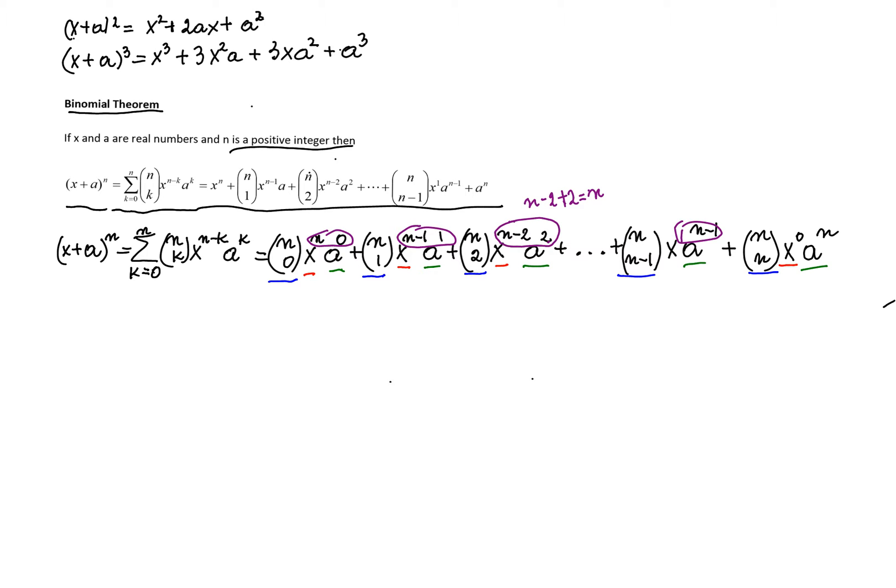For example, you can quickly write the formula for x plus a to the power, let's say, 5. We know that it's going to be the sum. So we'll start with 5 choose 0, the first term.